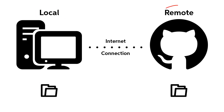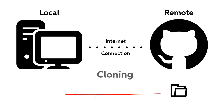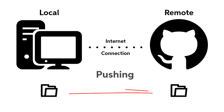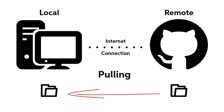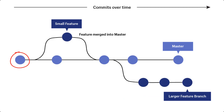The local repository is the version of your repository that exists on your device. On the other hand, the remote repository is the version that exists on a remote server — for our purposes, this is usually the GitHub website. Cloning is the act of copying a remote repository to your local device. Pushing is the act of sending your changes to the remote repository. Pulling is what you do when you want to receive the latest updates from your remote repository. A commit is like a snapshot of your project — it behaves like a checkpoint in a video game, and can be used to roll back mistakes or see the progress you've made.